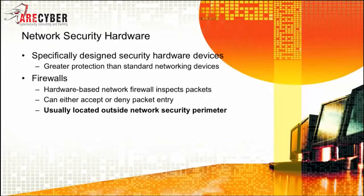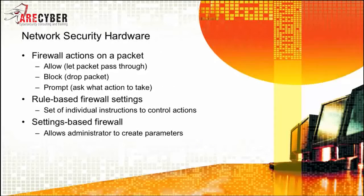Next, we'll talk about specifically designed security hardware devices, beginning with firewalls. The firewall can be either hardware or software-based. In network infrastructure, you'll typically find it hardware-based, performing inspection of packets. It can accept or deny packet entry and is usually located outside the network security perimeter. When dealing with a firewall, it has three basic choices: to allow, to block, or to prompt for action — either allow the packet to pass through, block or drop the packet, or prompt and ask what action to take.